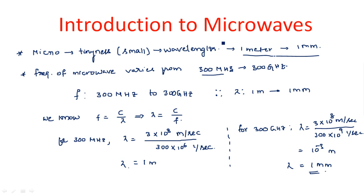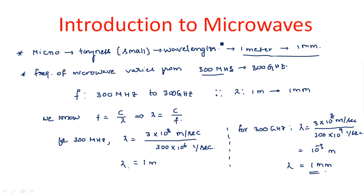Microwaves have large applications; in the next video I will explain the advantages and applications. They are used everywhere — even at home we use microwave ovens because microwave radiation generates heat.